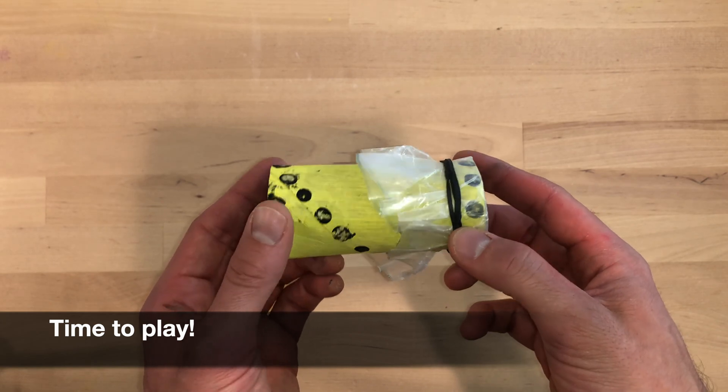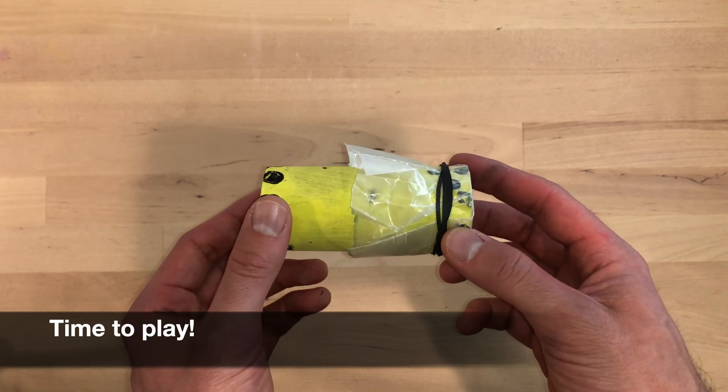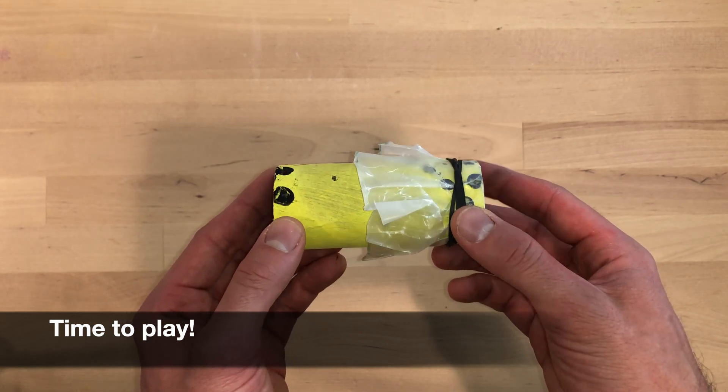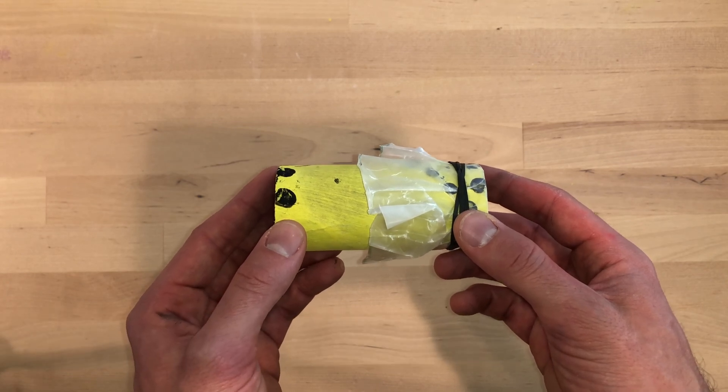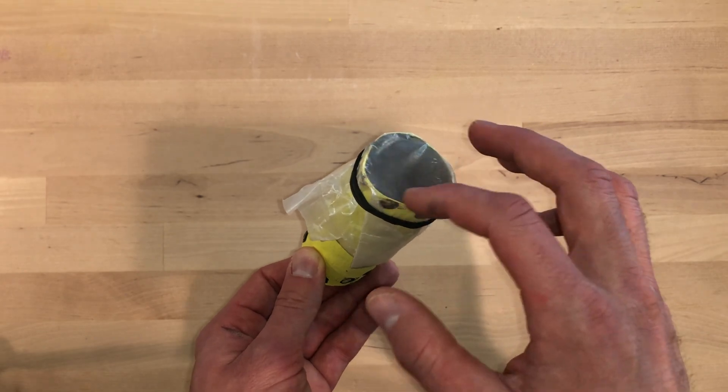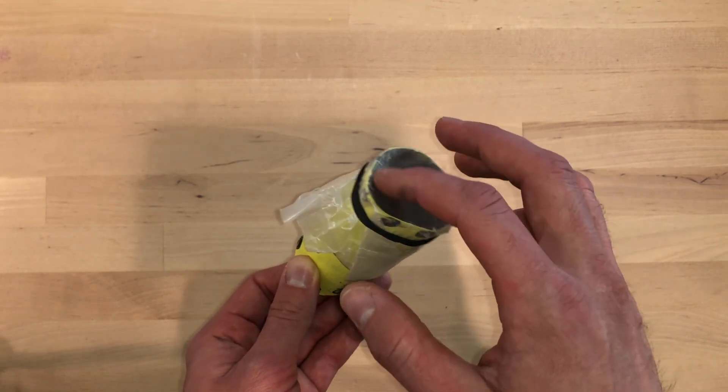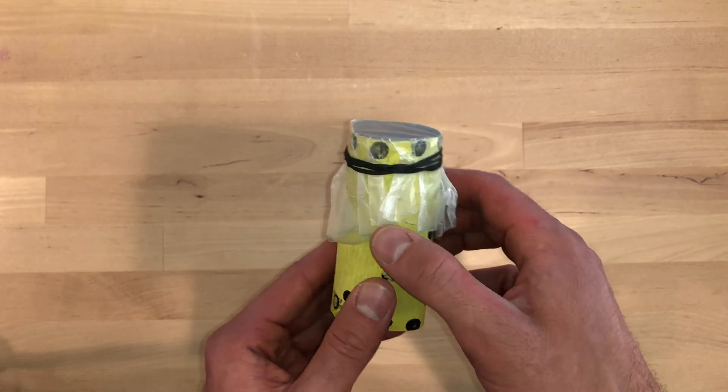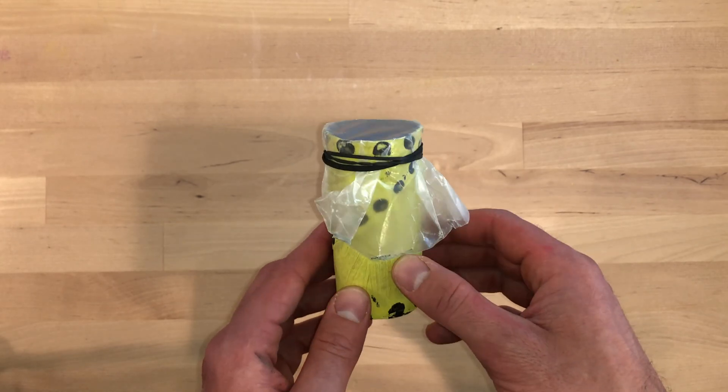Fantastic! Now we have a completed kazoo ready to play. Once again, the wax paper is our membrane or resonator. When we hum, talk, or sing into our kazoo, the air vibrates the membrane causing it to have its unique buzzing sound.